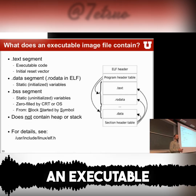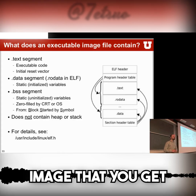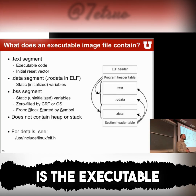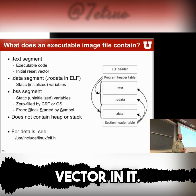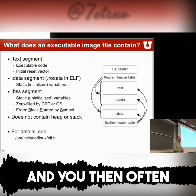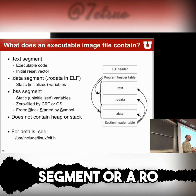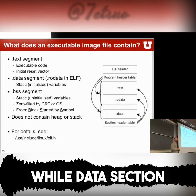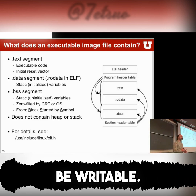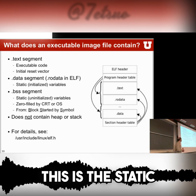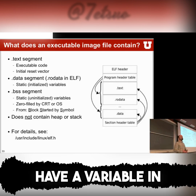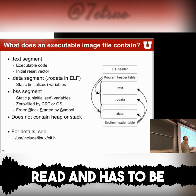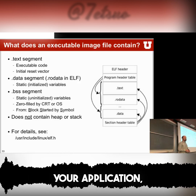So what does an executable image contain? This is the image you get out from a linker. It certainly still has the .text section, which is the executable code and also has the initial reset vector in it. You often have a .data segment or a .rodata section — .rodata is usually read-only data, while the .data section can sometimes be writable. This is the static part: it's initialized variables. Whenever you have a variable in your C code, it will go into the data section because it is data that has to be read and initialized at startup.